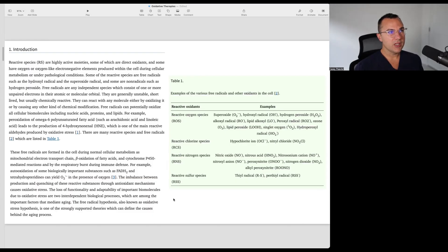Free radicals are any independent species which consist of one or more unpaired electrons in their atomic or molecular orbital. They are generally unstable, short-lived, but usually chemically reactive. They can react with any molecule either by oxidizing it or by causing any other kind of chemical modification. Free radicals can potentially oxidize other cellular biomolecules, including nucleic acids, DNA, RNA, proteins, and lipids. For example, peroxidation of omega-6 polyunsaturated fatty acid, such as arachidonic acid or linoleic acid, leads to production of 4-hydroxynonenal, HNE, which is one of the main reactive aldehydes produced by oxidative stress. There are many reactive species and free radicals, which are listed in Table 1.